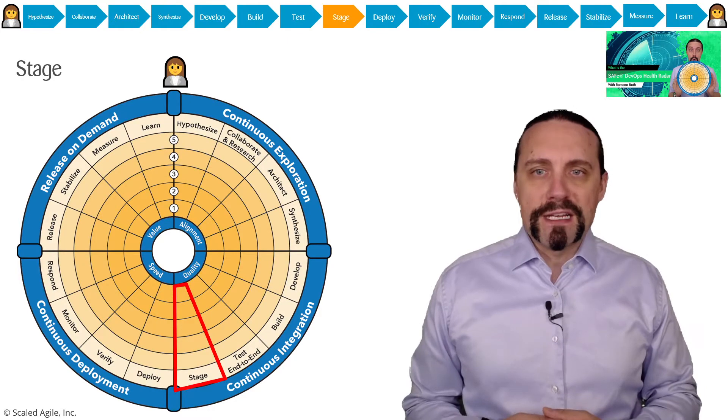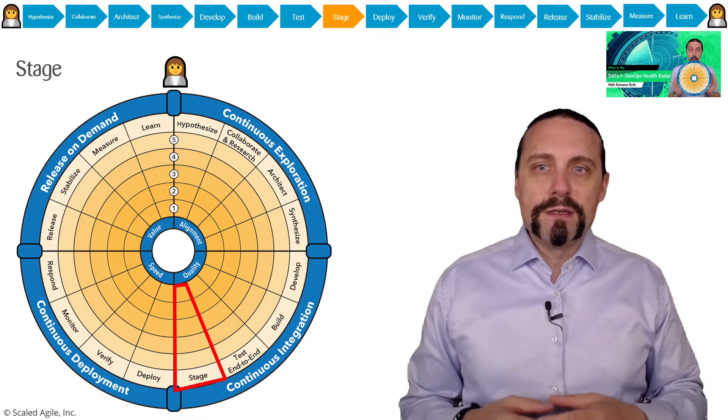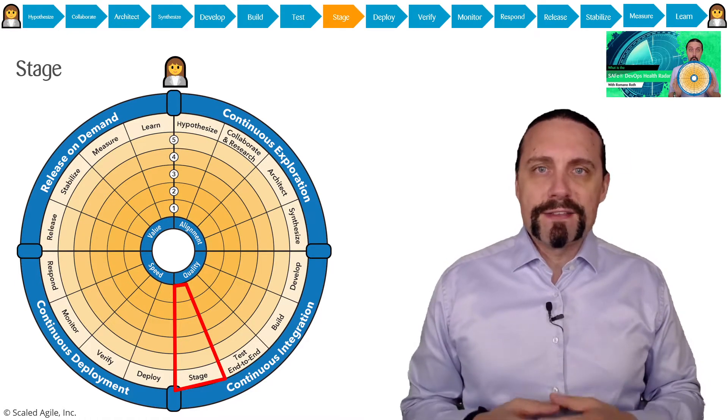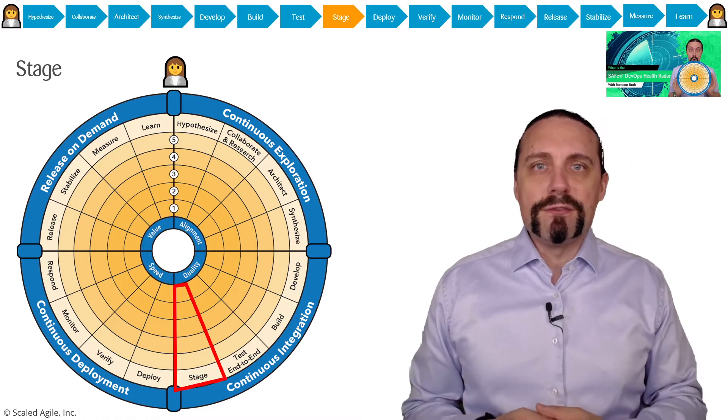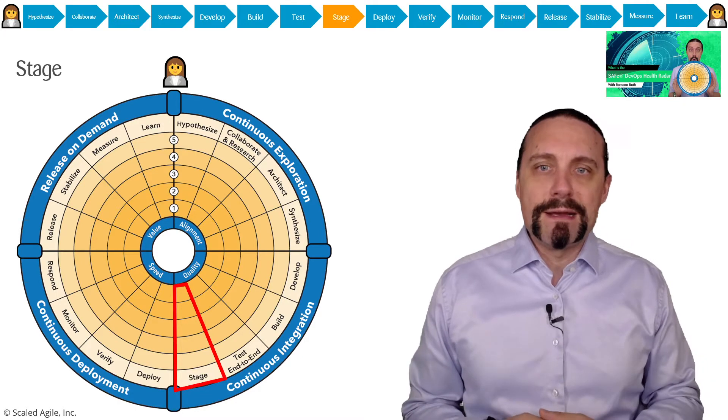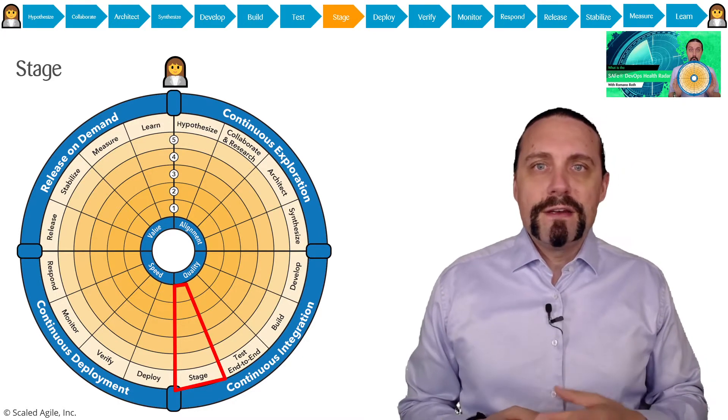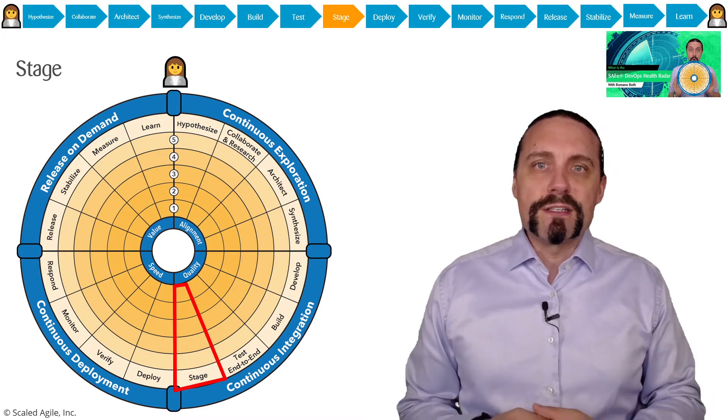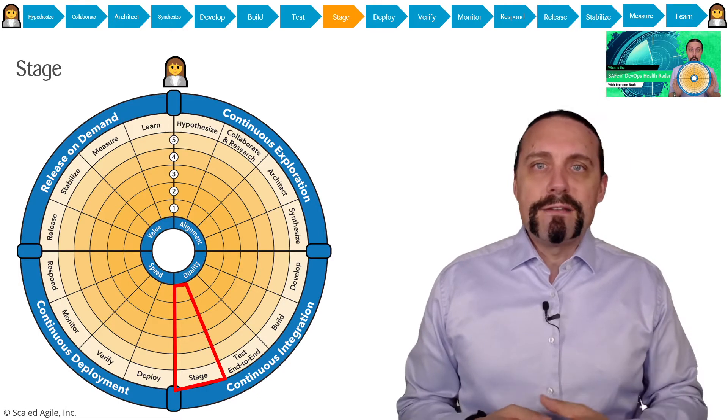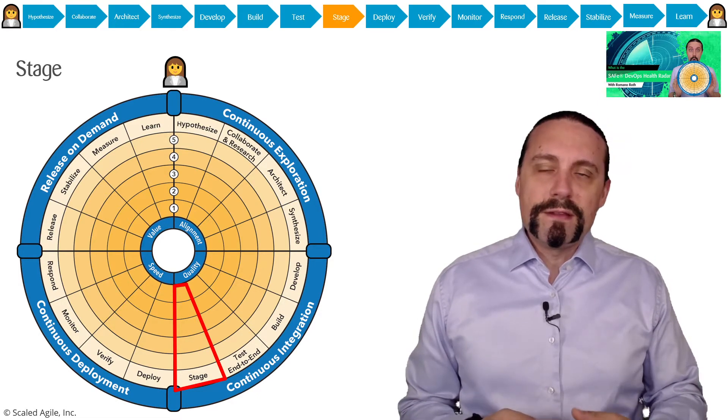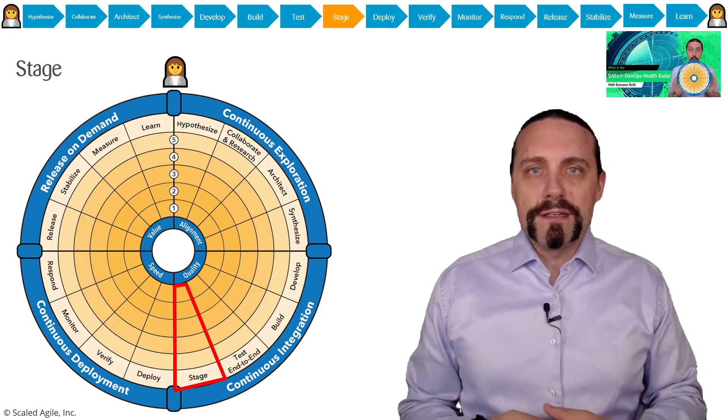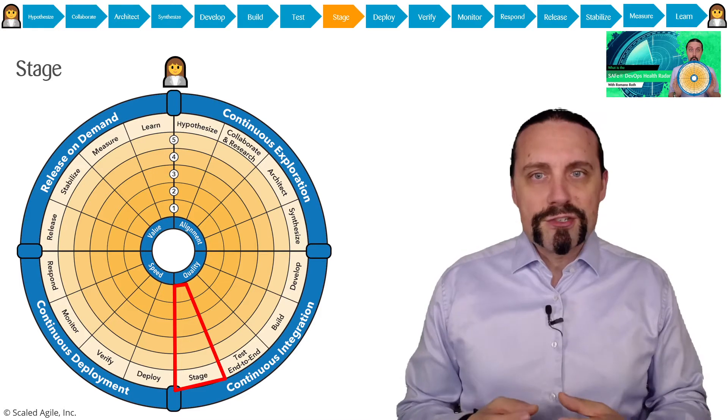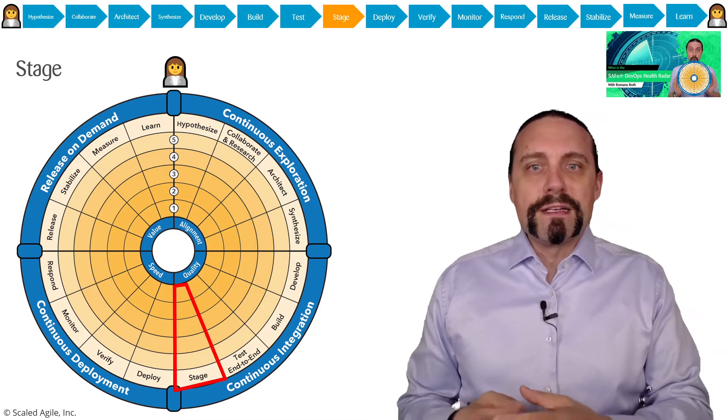In the SAFe for DevOps Health Radar we start with the customer. The customer or the business has bright ideas and these ideas are transferred into epics with a clear hypothesis statement. After that we go into collaborate and research where we research the customer needs and do the market research. Then we go into architect where we architect the minimal architecture for proving this hypothesis.